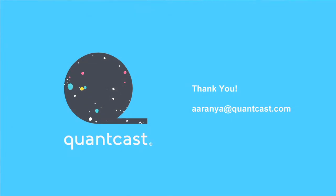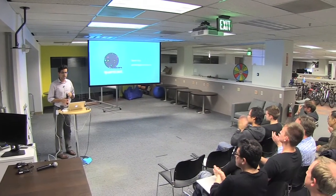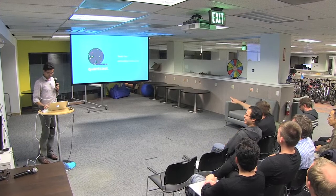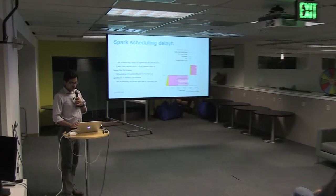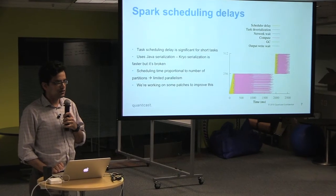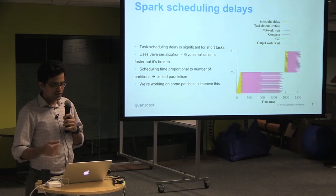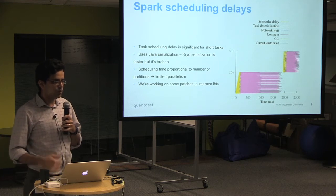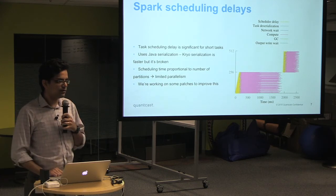That concludes my talk. If you have any questions, I'd be happy to answer. [Q&A] This is a tool released by UC Berkeley. It basically collects a trace of events — Spark has the capability of collecting a trace saying when a task started serialization, when it went to the worker and started executing, when it sent back the results. The UC Berkeley tool takes that input and plots it out, and I found it very useful for debugging performance.